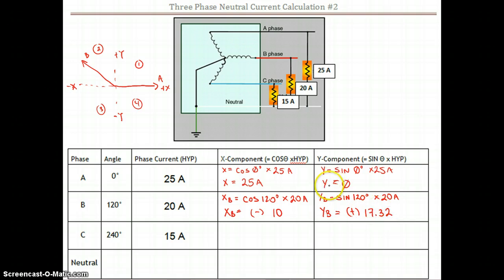So next one for 240 degrees, well, that vector for C ends up being right here at 240. And it looks like before we punch anything into the calculator, it should have a negative x component and a negative y component. So again, let's do this. The x component for C is the cos of the angle, 240 degrees, times our hypotenuse of 15 amps.